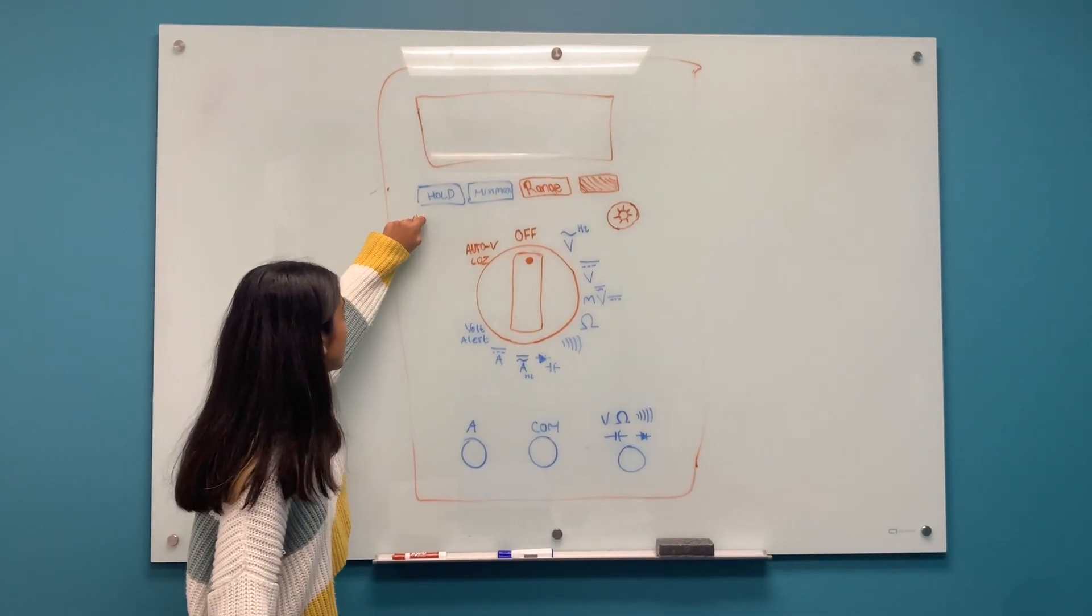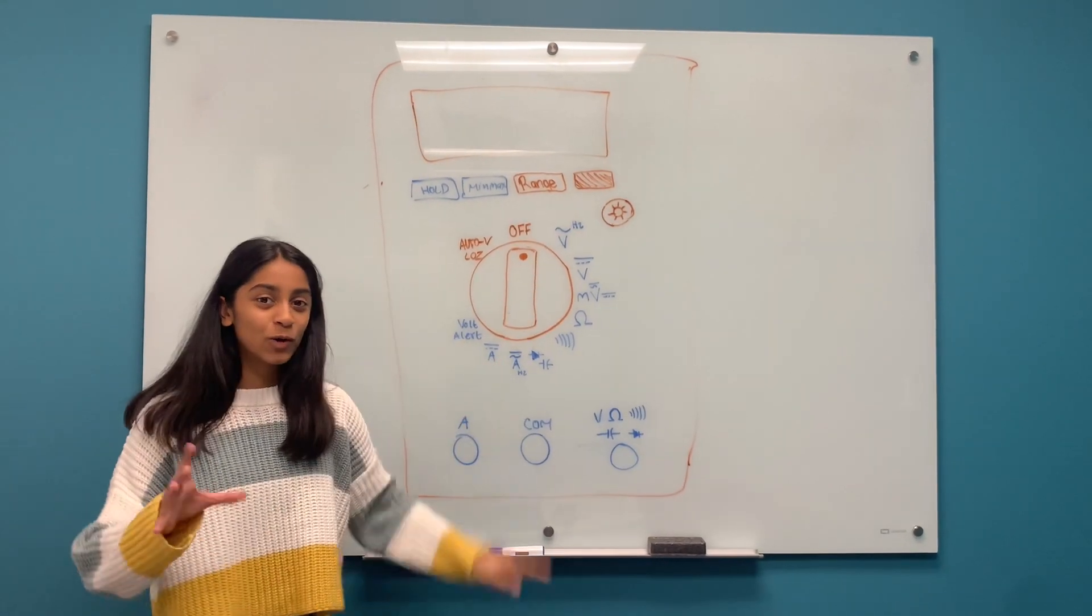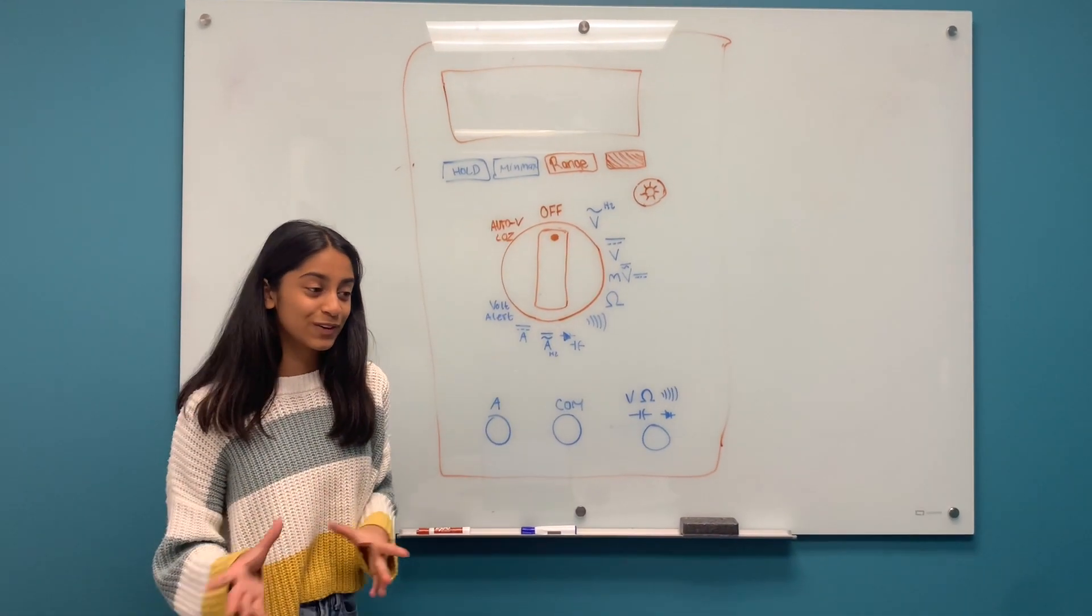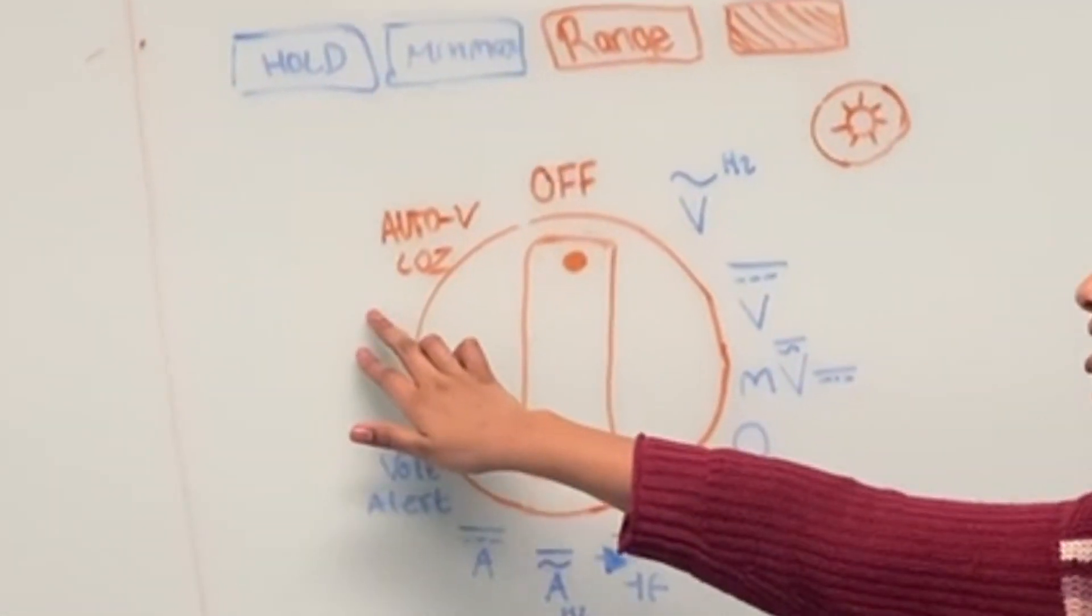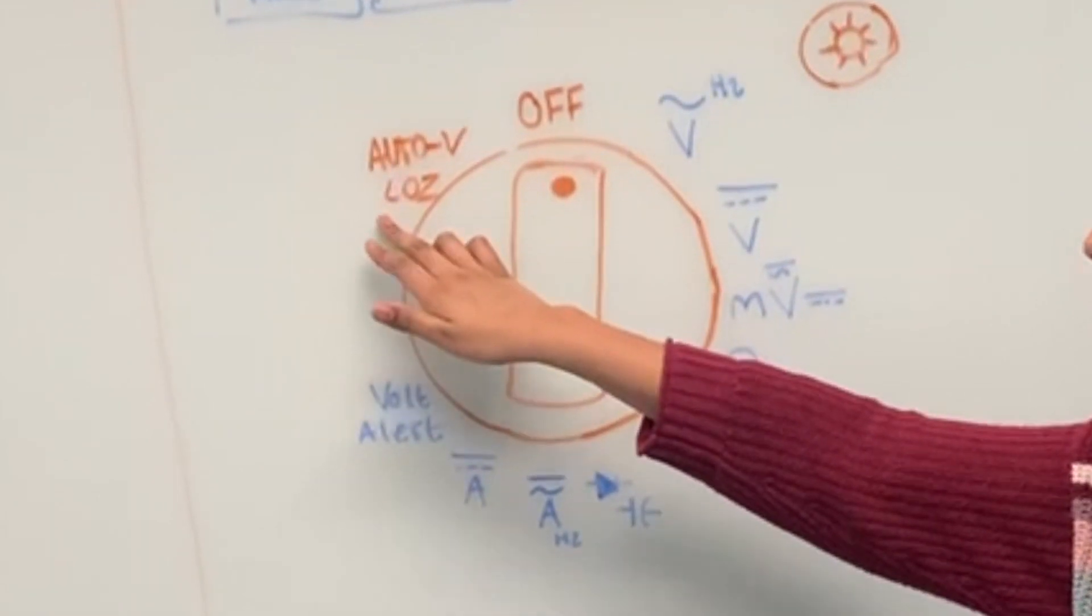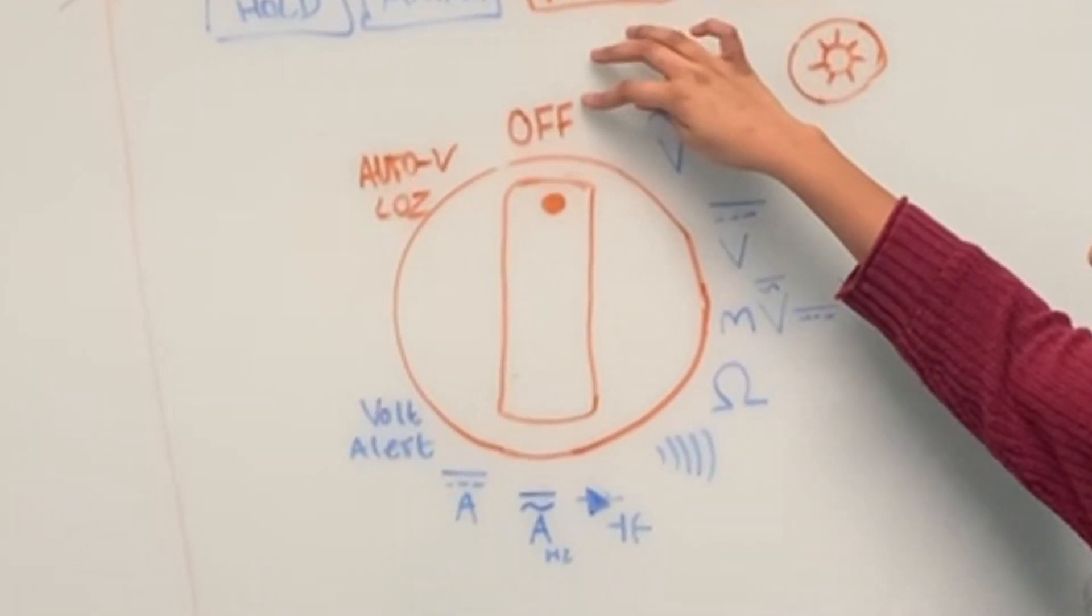This is the hold button, which basically, if you have a number in the screen, if you press this button, it'll hold it on screen so it doesn't go away. So if you need to write it down or something, that's helpful. This button determines if it's an alternating current or a direct current. This turns the multimeter off.